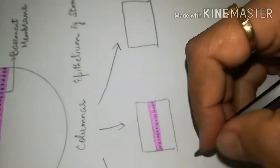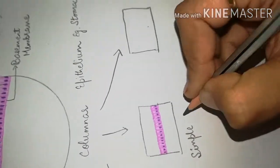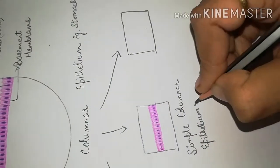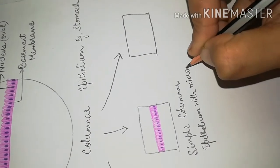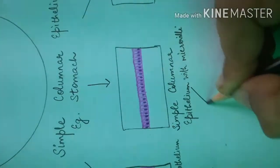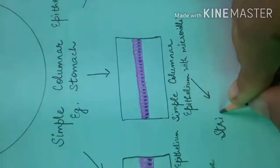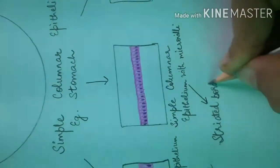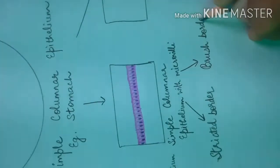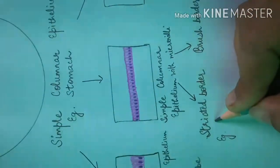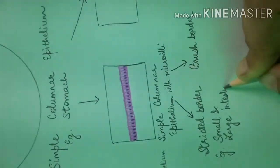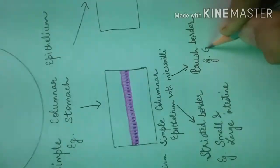Here we will label this epithelium as simple columnar epithelium with microvilli. When microvilli are arranged regularly, it is known as striated border, and when microvilli are arranged irregularly, it is known as brush border. The example of striated border is the small and large intestine, while the example of simple columnar epithelium with brush border is the gallbladder.